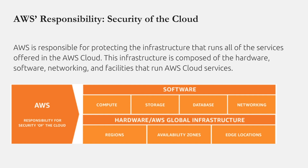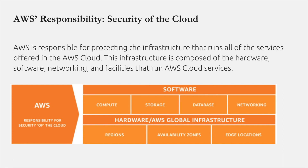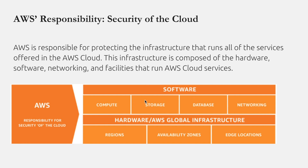AWS is responsible for protecting the infrastructure that runs all the services offered in the AWS cloud. This infrastructure is composed of the hardware, software, networking, and facilities that run AWS cloud services. The data center where your servers live has physical security — CCTV cameras, walls, and mechanisms protecting against unwanted people entering. These things are taken care of by AWS. AWS handles regions, availability zones, and edge locations, so you don't have to buy physical hardware and set things up from scratch. AWS takes care of protecting the data center, setting up wiring, and providing services like compute, storage, database, networking, and their APIs.